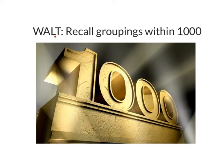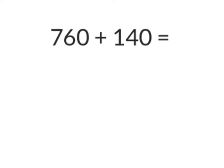We are learning to recall groupings within 1000. Here I have the problem 760 plus 140, and I want to work out what that equals altogether. I can see that both these numbers are tidy numbers because they end in a zero, so that's going to make it easier for me to add them.